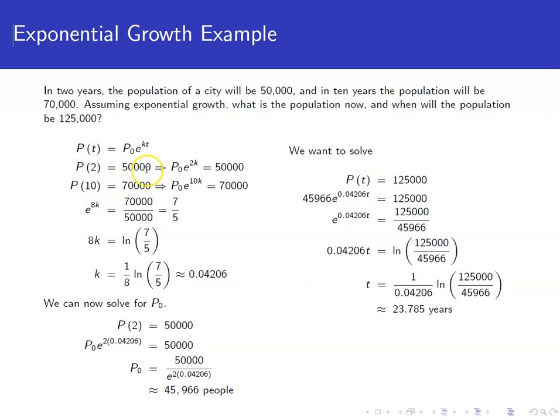We know that when we plug in 2, we're supposed to get out 50,000, so we have P₀e^(2k) = 50,000. Likewise, when we plug in 10, we're supposed to get out 70,000, so we have P₀e^(10k) = 70,000.